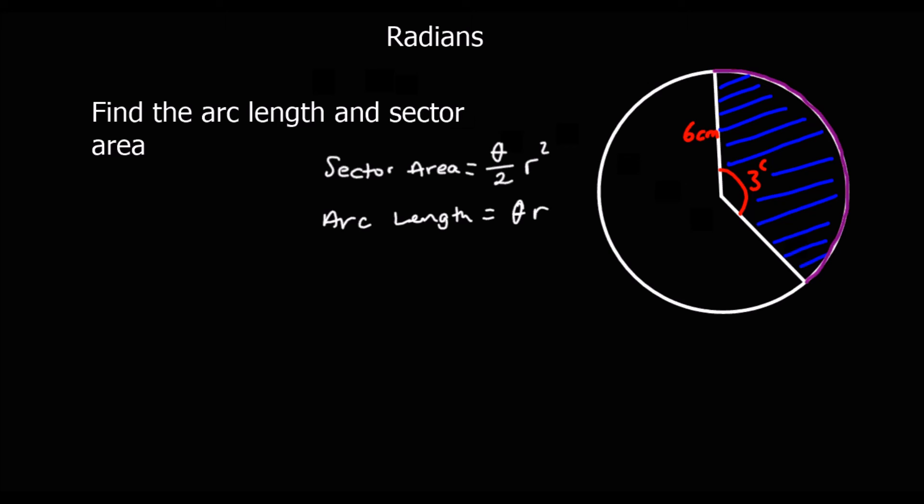Okay, so let's look at the sector area first. Theta is going to be three and r is going to be six. So the sector area is three over two multiplied by six squared. So that's three over two multiplied by 36. So that's one and a half thirty sixes, so 36 plus 18, so 54 centimeters squared.